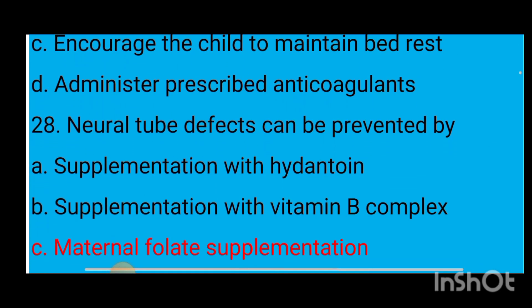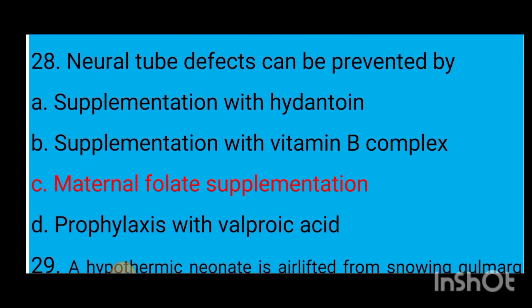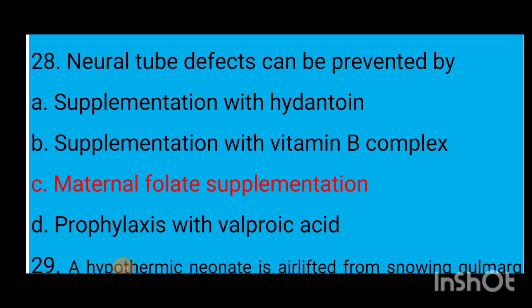Question number 28: Neural tube defect can be prevented by option A supplementation with high doses of iron, option B supplementation with vitamin B complex, option C maternal folate supplementation, option D prophylaxis with valproic acid. The correct answer is option C — maternal folate supplementation — because folate deficiency during pregnancy increases the chances of neural tube defect.